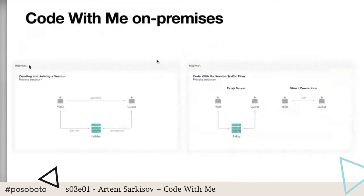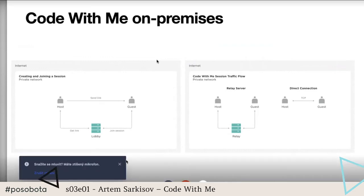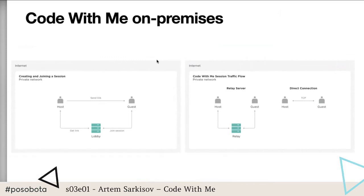Speaking of enterprise companies, I'm often asked if Code With Me has a self-hosted version. Yes, it does — we call it Code With Me on-premises. By default, your project data goes through JetBrains' service end-to-end encrypted. However, some teams require extra security or strict compliance — for instance, banks or governmental agencies. In that case, you can set up and run Code With Me on your own server as long as you have a Linux machine and are ready to set up your own lobby server.